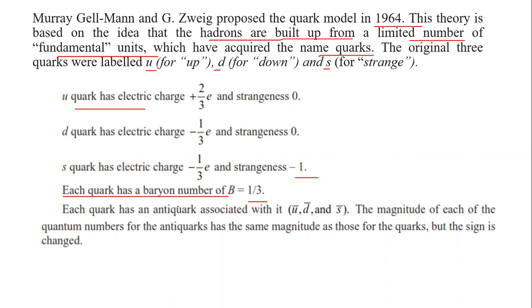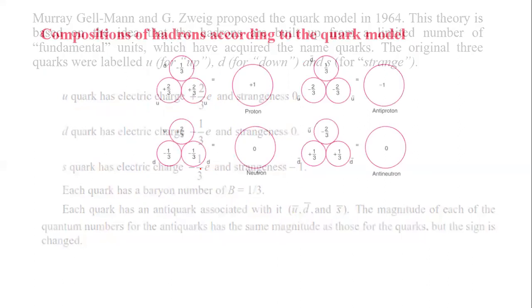Now, each quark is associated with an antiquark. It is represented by u-bar, d-bar, and s-bar. These have charges plus one by three e, plus one by three e, and plus one by three e, with strangeness equal to one.